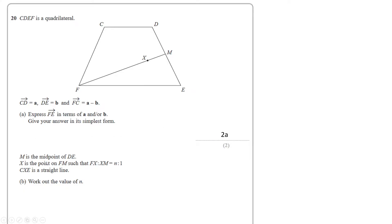Part B is where it gets slightly trickier. They tell us that M is the midpoint of DE and X is the point on F such that F to X to M is in the ratio N to 1. They also tell us that C is a straight line, which will be useful later on. We need to work out the value of N.